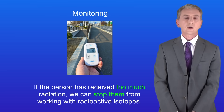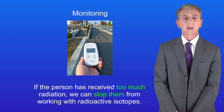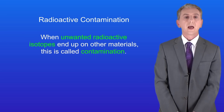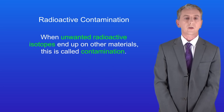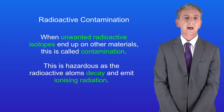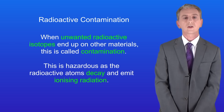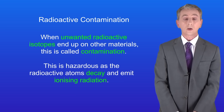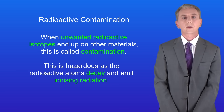Now let's look at radioactive contamination. Radioactive contamination is when unwanted radioactive isotopes end up on other materials. This is hazardous as the radioactive atoms decay and they emit ionizing radiation. With radioactive contamination you now have the radioactive source on you or in you, and you could get a large dose of radiation.